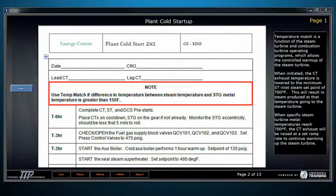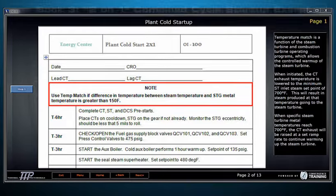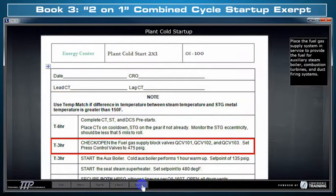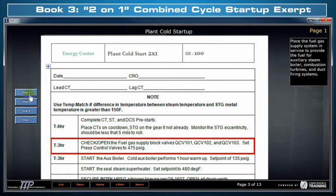And Book 3, which is part of an overall 2-on-1 combined cycle plant start-up. Place the fuel gas supply system in service to provide the fuel for auxiliary steam boiler, combustion turbines, and duct firing systems.